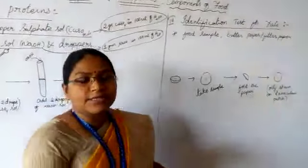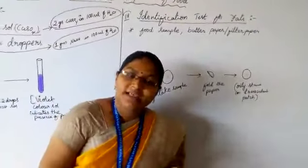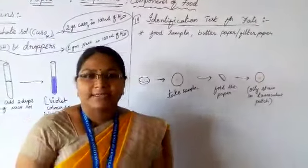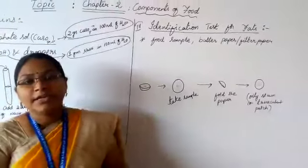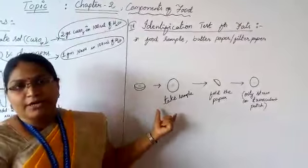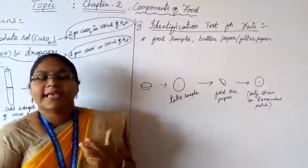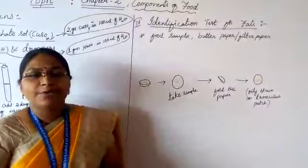Next, identification test for fats. Already in previous class I said energy giving foods are carbohydrates and fats. Fat is an energy giving nutrient. Which food contains fat? That food we can call energy giving food.